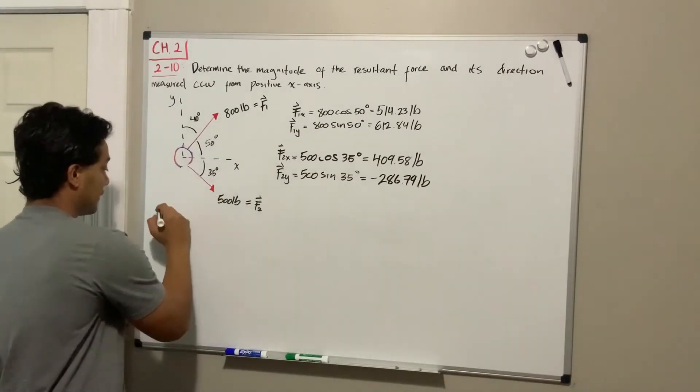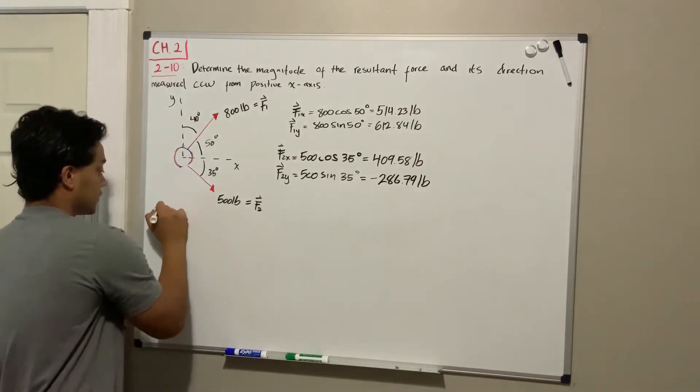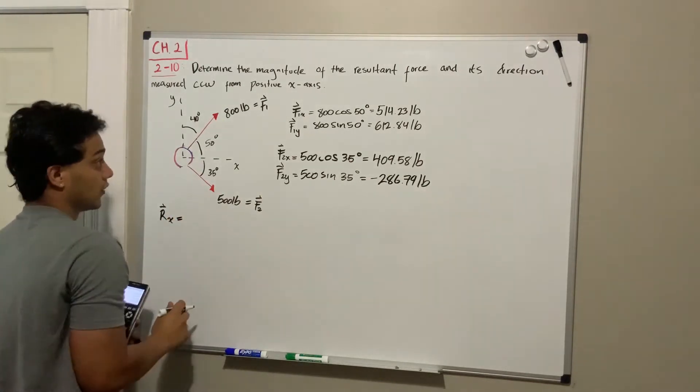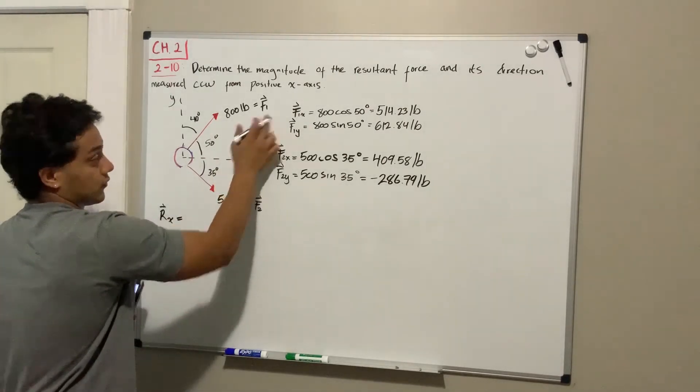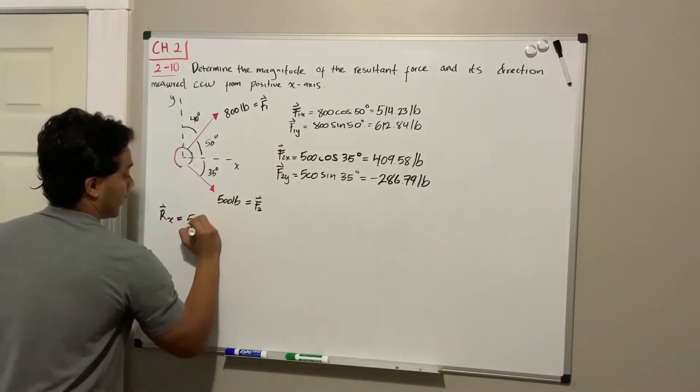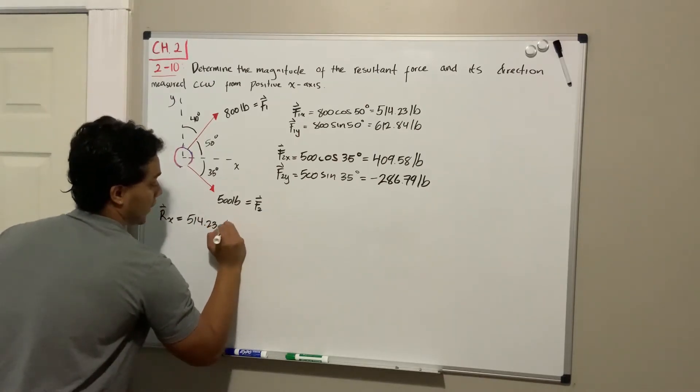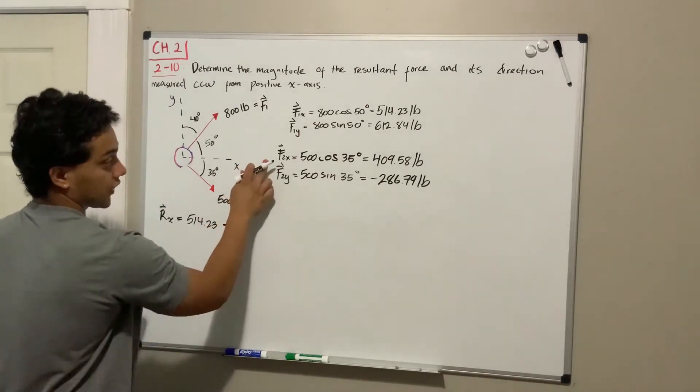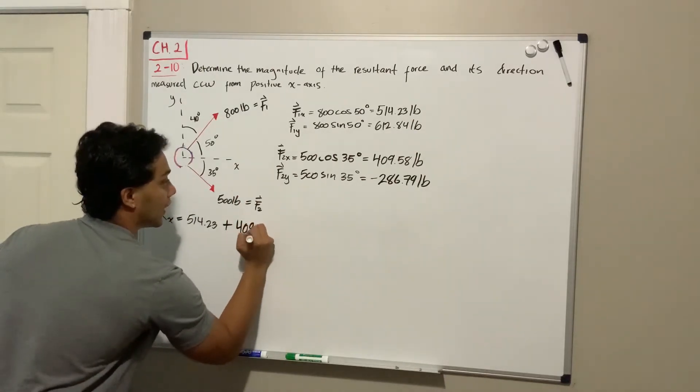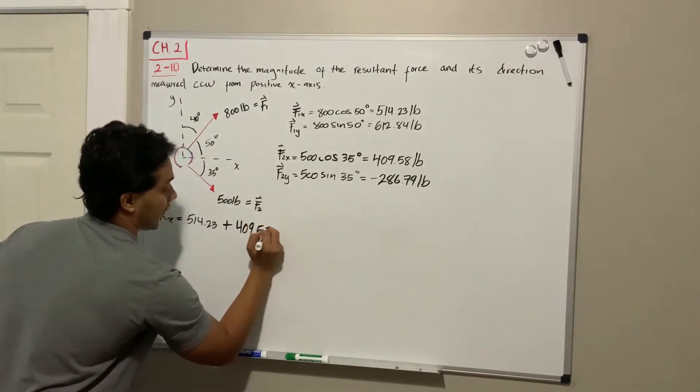After decomposing these two forces we're gonna find the resultant by adding them up. So the resultant in the x direction, we're gonna have F1x which is 514.23 plus F2x which is 409.58.